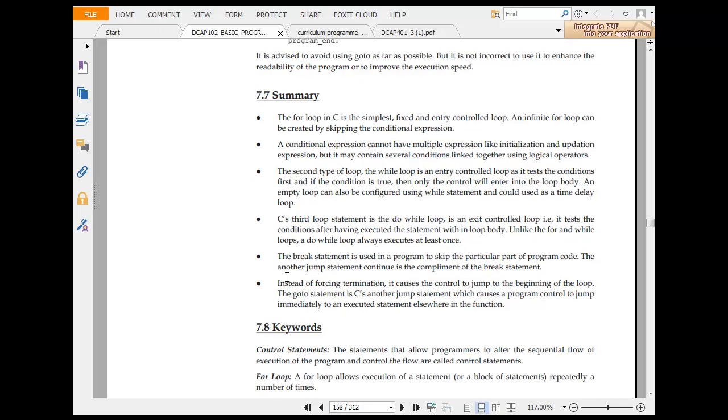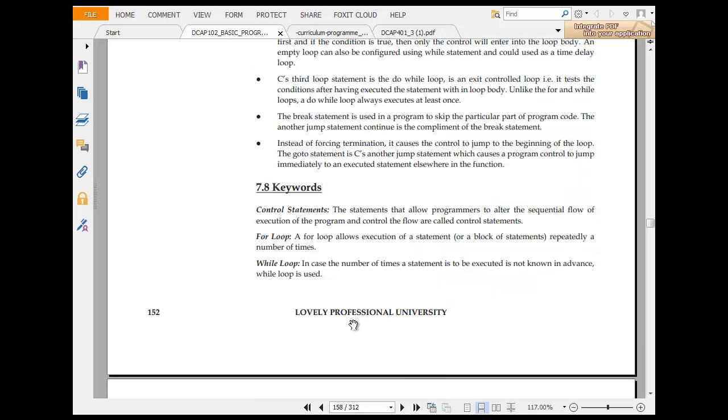A test condition, the break is used to skip the particular part of the program. Another jump statement is continue. So break statement instead of forcing termination causes control to jump. At the beginning of the loop, goto statement is another jump statement which causes control to jump immediately to an executed statement elsewhere in the function.